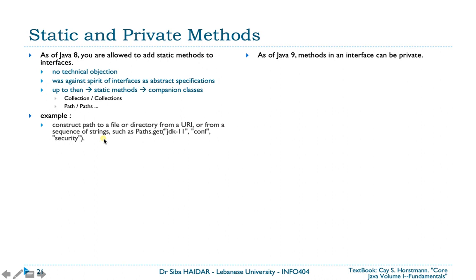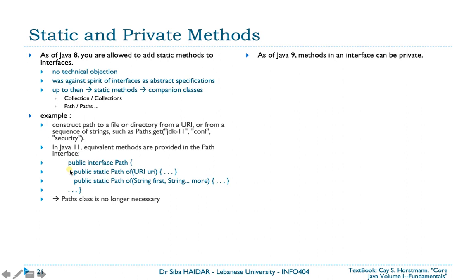You no longer need a companion class. For example, you can construct paths to a file or directory from a URI or from a sequence of strings such as Paths.get(). This was available before Java 8, but now in Java 11 equivalent methods are provided inside the Path interface itself — for example: public static Path of(URI uri) or of(String first, String... more). Since Java 11 these are implemented in the interface and the Paths class is no longer necessary.